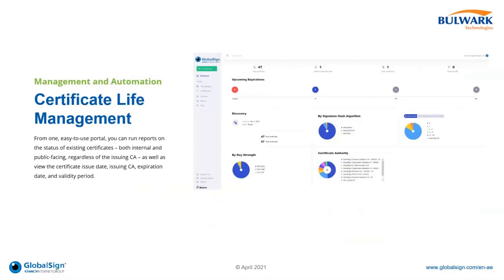The Certificate Inventory Tool within our CLM solution enables complete certificate automation, helping businesses avoid missing expiration deadlines and preventing business outages. Over a single platform, all certificates - internal and public-facing, regardless of the issuing CA - can be detected, tracked, and managed with automatic reminders and notifications regarding expirations and renewals.